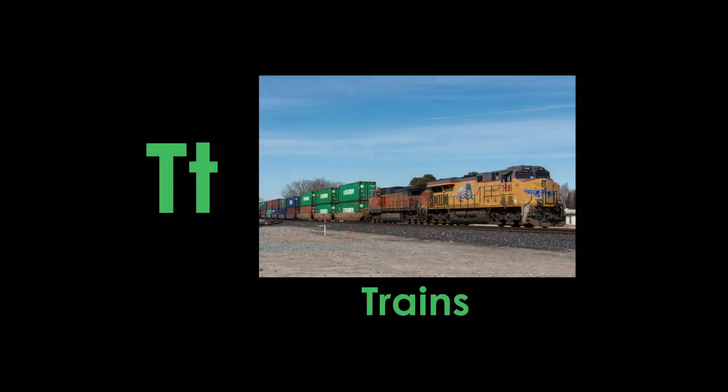T is for trains. Railroad trains carry people, and they also carry things that people need, like the train in this picture. Trains were very important for Kansans even before Kansas became a state. The Atchison, Topeka, and Santa Fe Railway was one of the largest railroad companies in the United States, and it was started in Kansas to provide a fast way to travel to Santa Fe, New Mexico, from the Kansas towns of Atchison and Topeka.